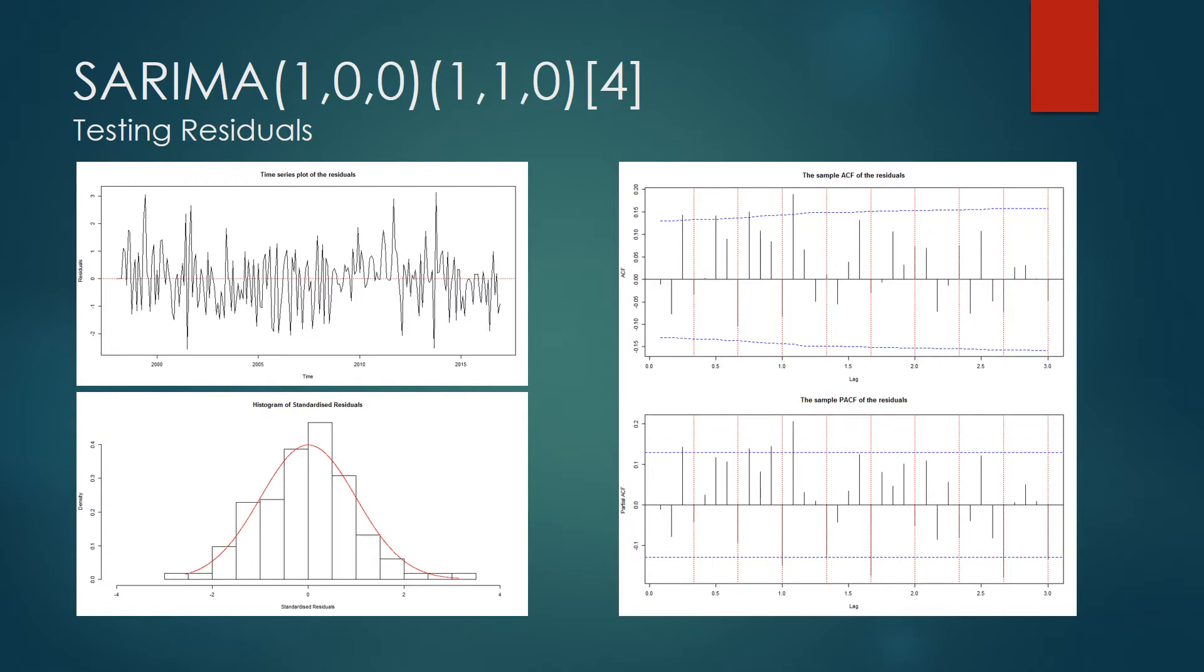The Shapiro-Wilk normality test for this model has a p-value of 0.0466. We therefore do not need to consider it further, as this level of significance tells us that the residuals are not normally distributed.